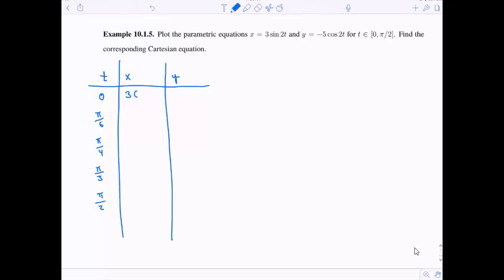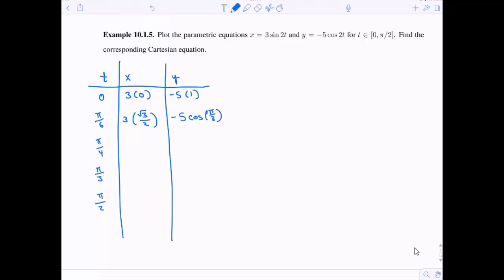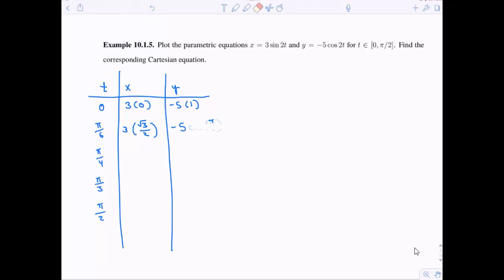If I plug in 0 into x, well x is sine of 2t, so this is going to be 0. 3 times 0 is of course 0. When I plug in 0 into y, this gives me 1 times negative 5. Let's plug in pi over 6. Now this is sine of really pi over 3, right? Because we're doubling it, sine of 2t. Sine of pi over 3 is root 3 over 2. When I plug pi over 6 into cosine, this is cosine of pi over 3, because again we're doubling it. Cosine of pi over 3 is 1 half.